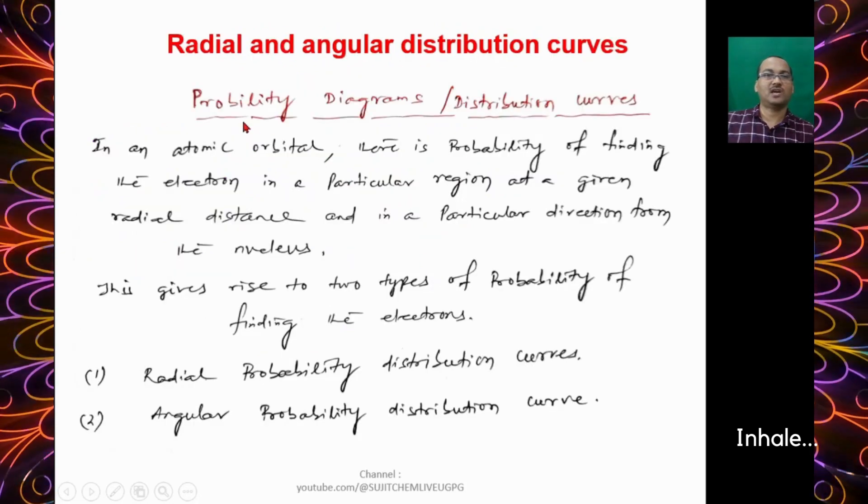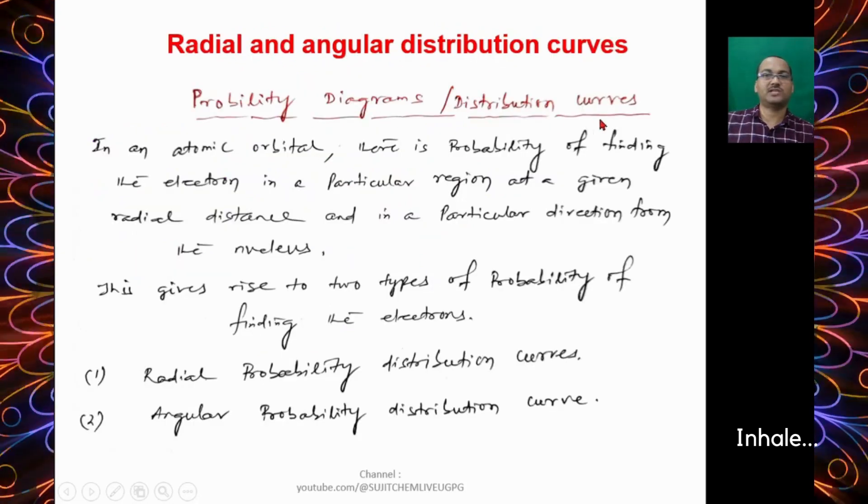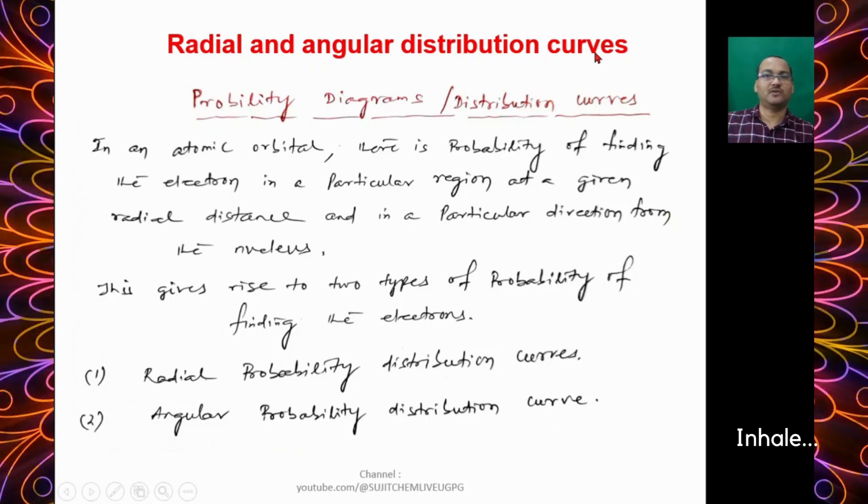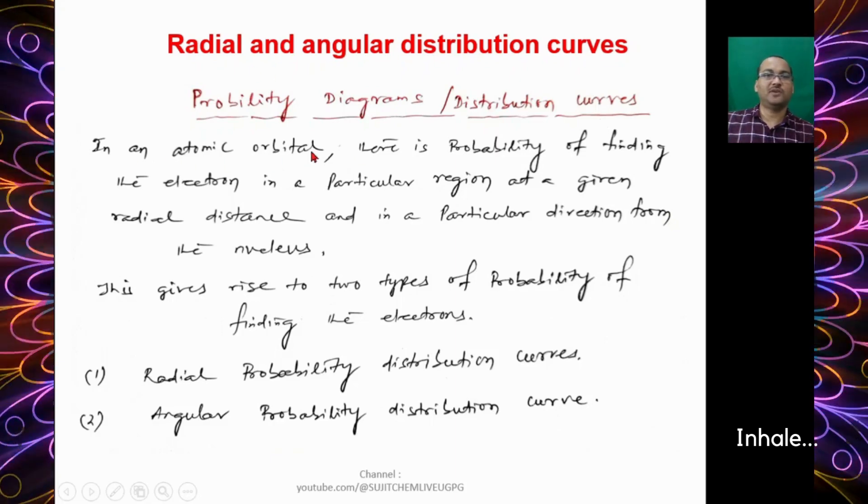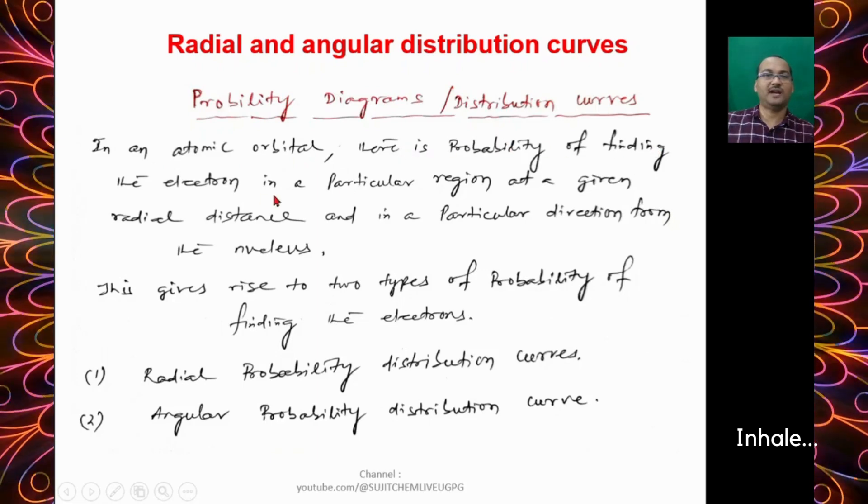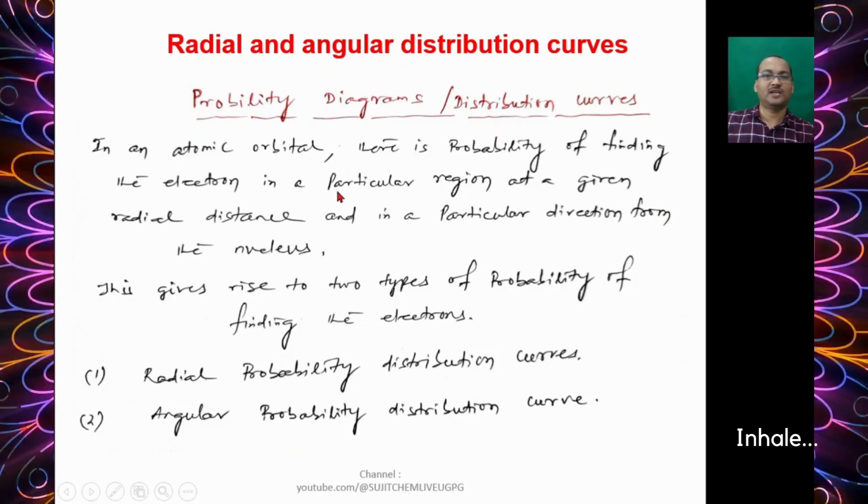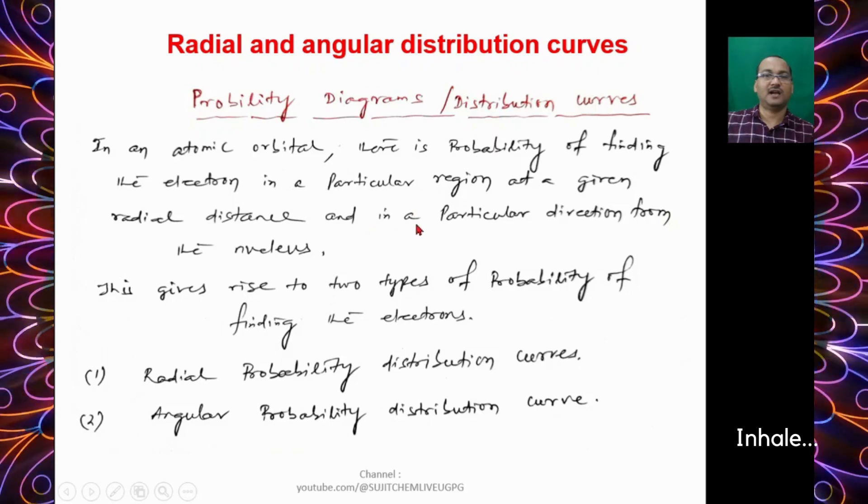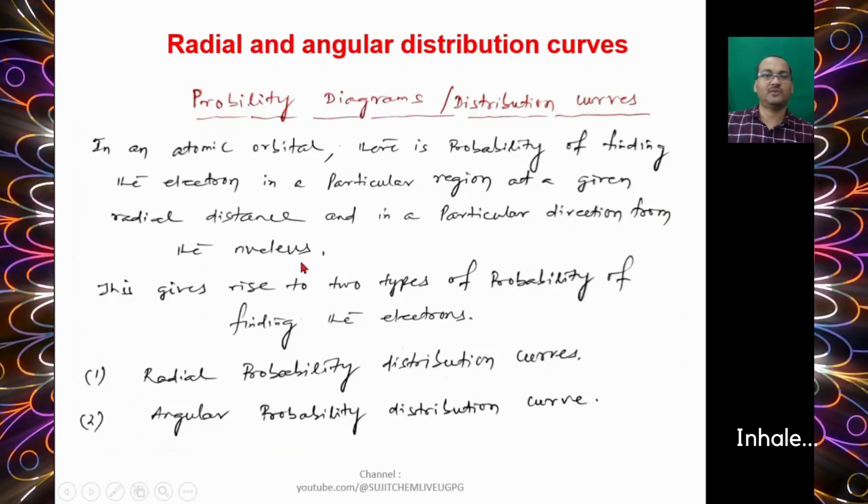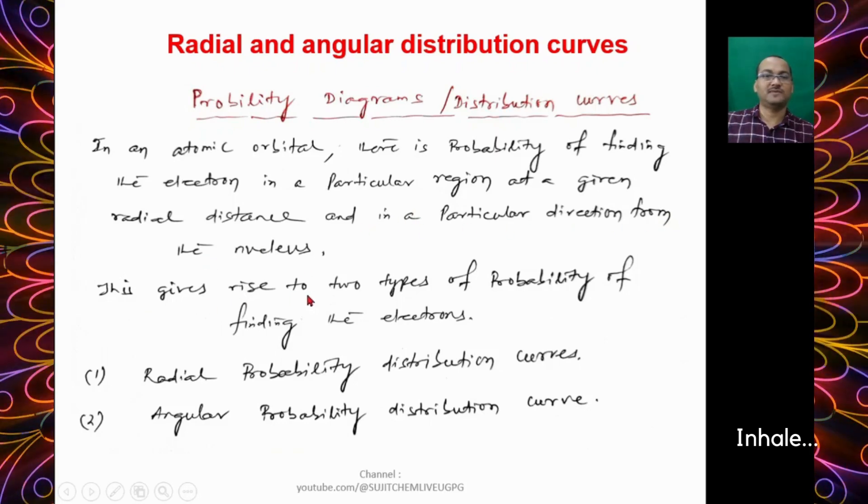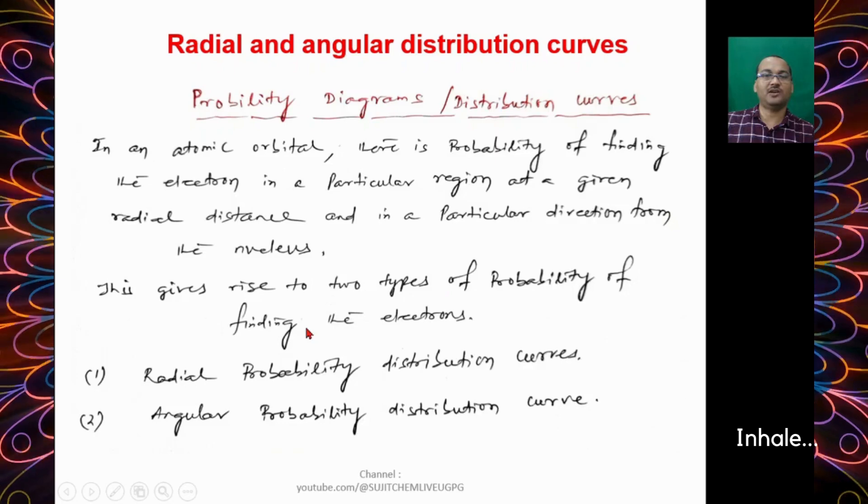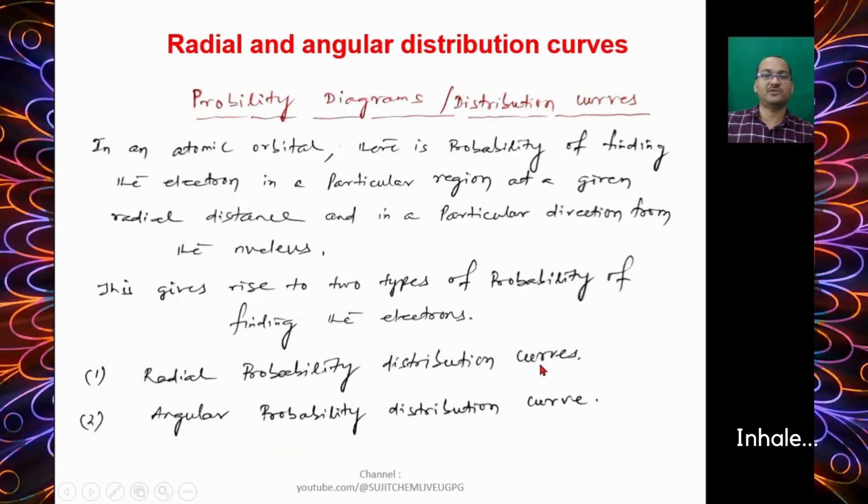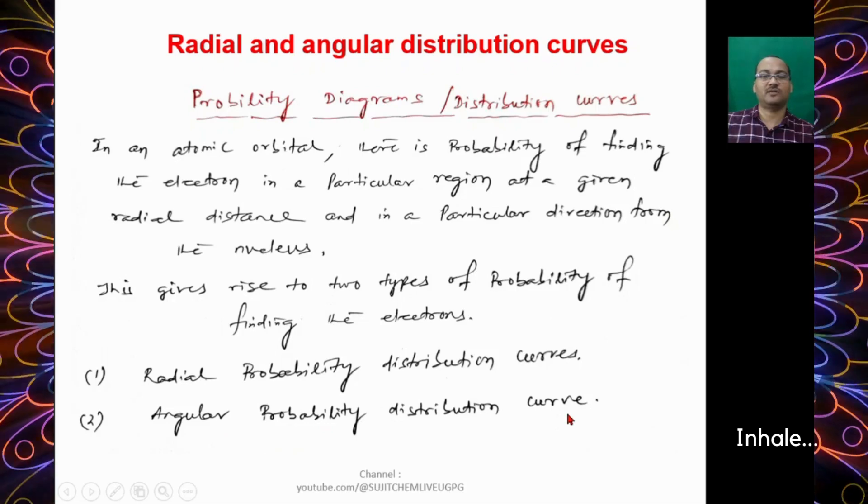Let's talk about the probability diagrams or distribution curves. In an atomic orbital, there is probability of finding an electron in a particular region at a given radial distance and in a particular direction from the nucleus. This gives rise to two types of probability of finding the electrons: First is Radial Probability Distribution Curve, second is Angular Probability Distribution Curve.